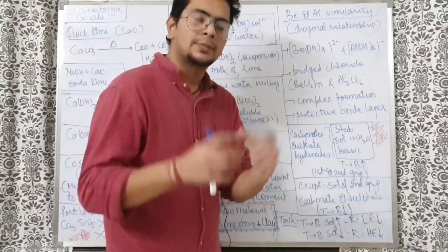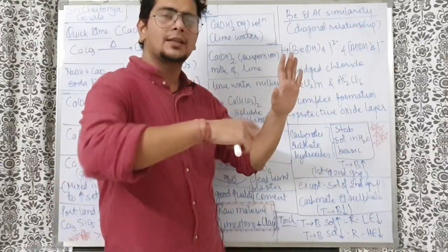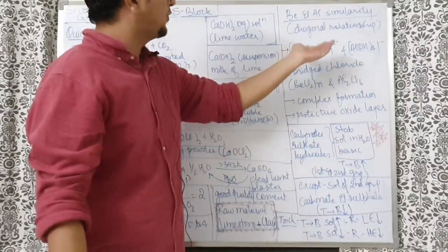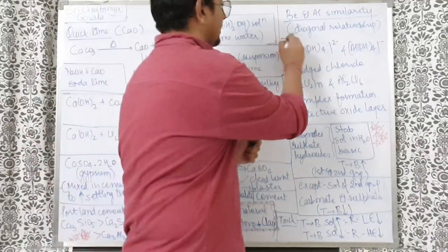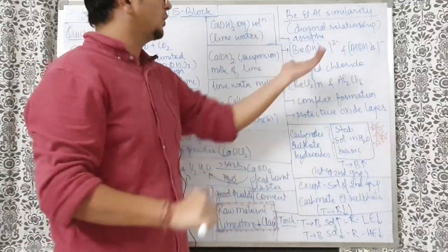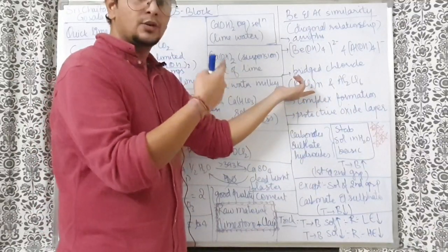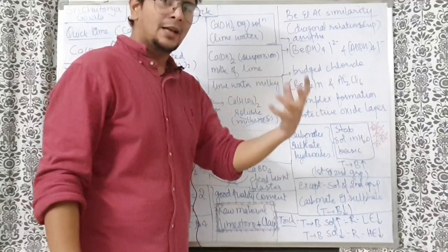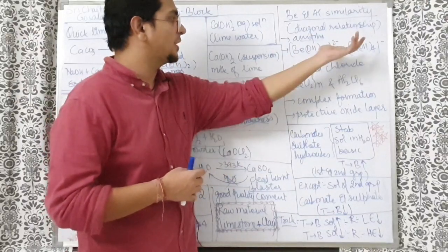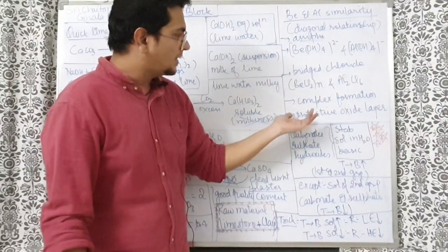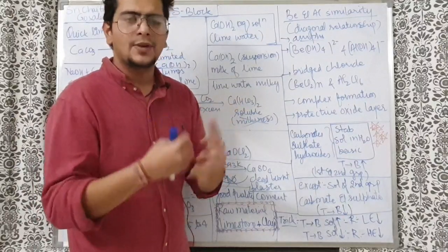Beryllium and aluminum show a diagonal relationship. Both are amphoteric in nature. Both form bridged chloride structures — BeCl2 forms a polymer (Sp3 hybridized Be), while AlCl3 forms a dimer Al2Cl6. Both form complex compounds easily and both have a protective oxide layer on their surface, making them kinetically inert toward air and HNO3.